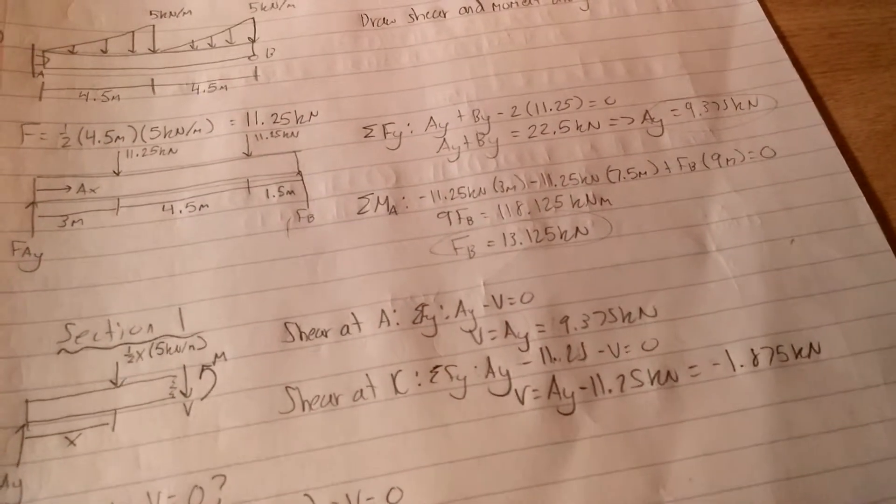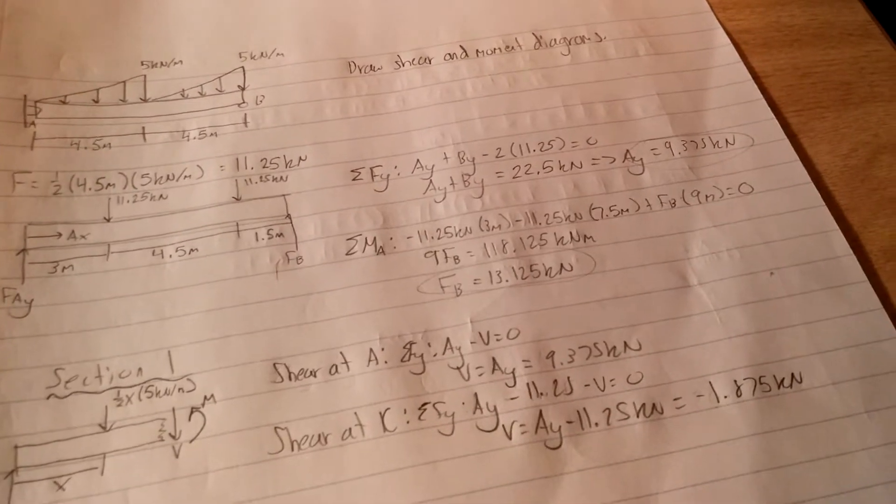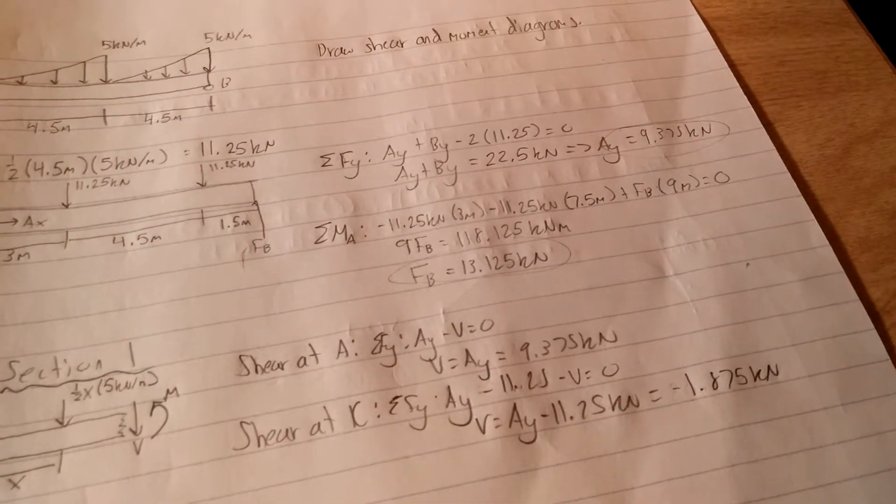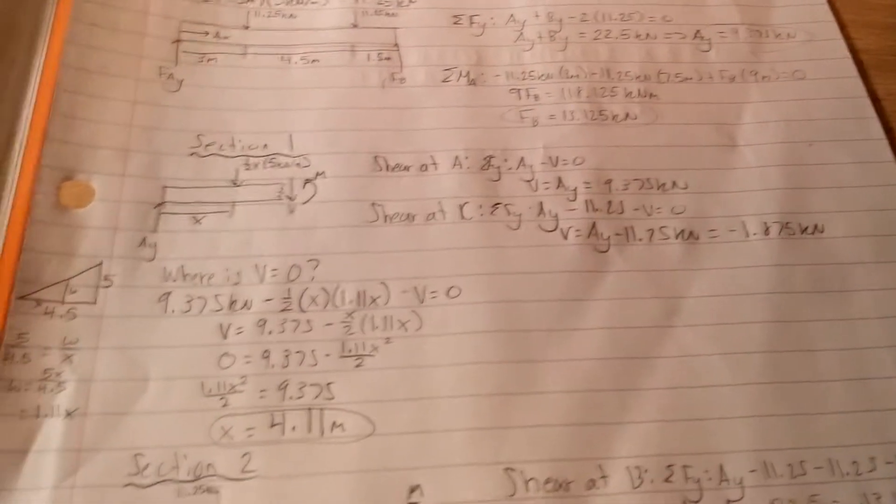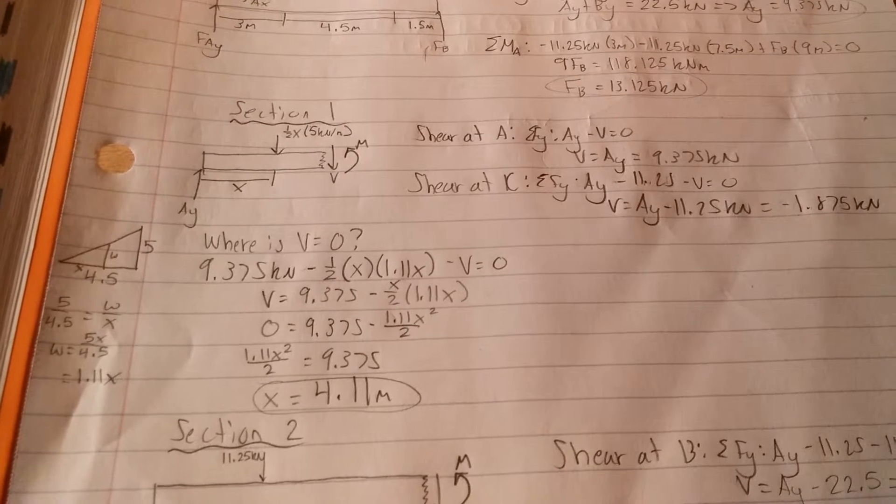Divide by 9, you end up getting that FB is 13.125 kilonewtons. And AY, once you solve that system, is 9.375 kilonewtons. So we have our reaction forces, now we can worry about the shear and moment diagram.